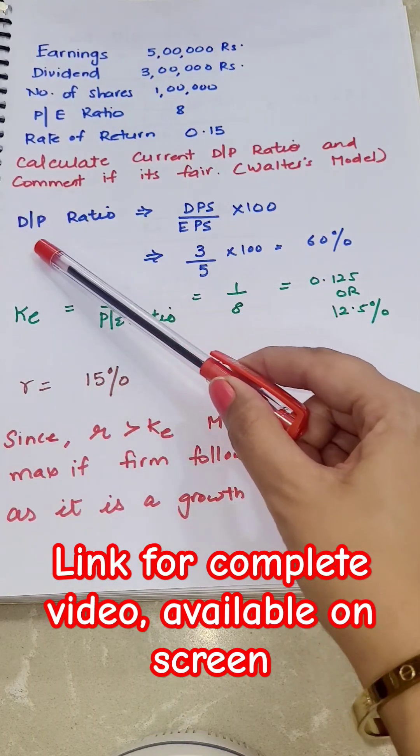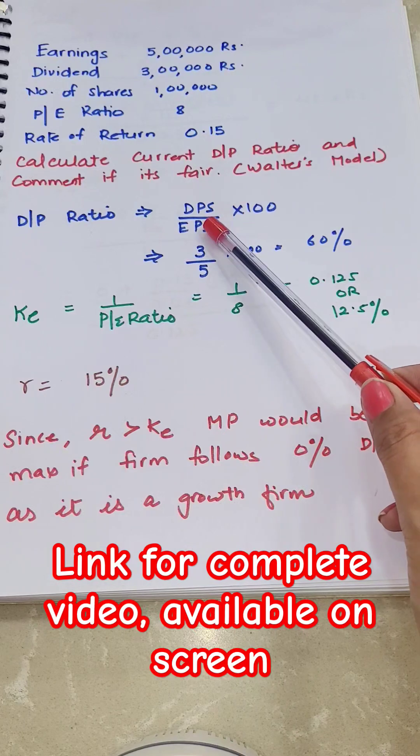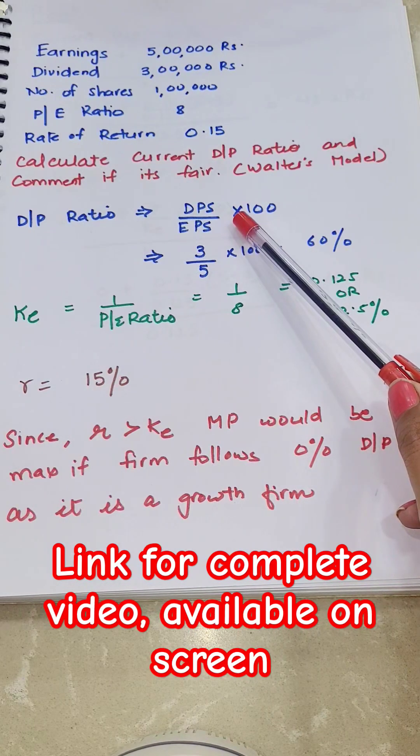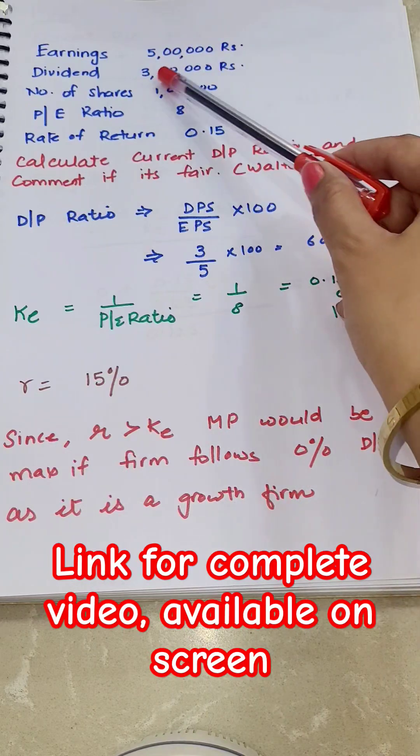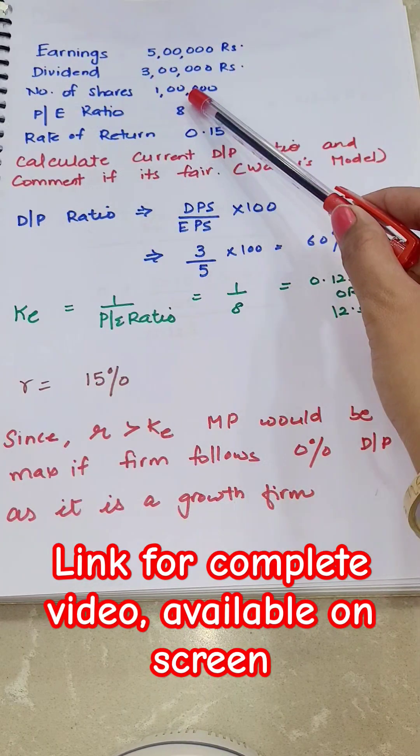So here we have to calculate DPS by EPS into 100. DPS is not given but we can easily calculate by taking dividend paid, that is 3 lakh, by number of shares, 1 lakh.